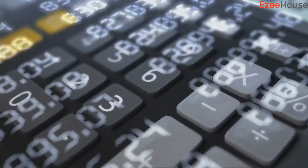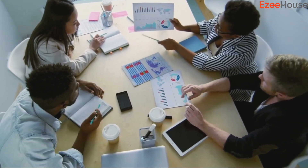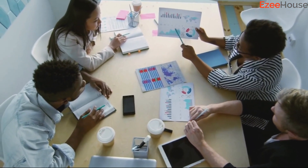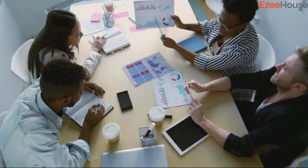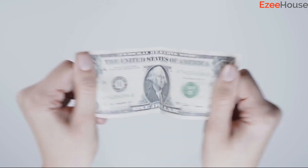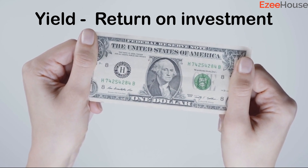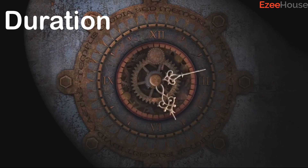Rather than just listing the types of debt funds, we need to understand the risks involved and what impacts them. Let's start with yield. Yield is basically your return on your investment. If you have an FD giving seven or eight percent return, the yield on your investment is seven or six percent. In the case of an FD, there is primarily no interest rate risk because your interest rate is fixed.